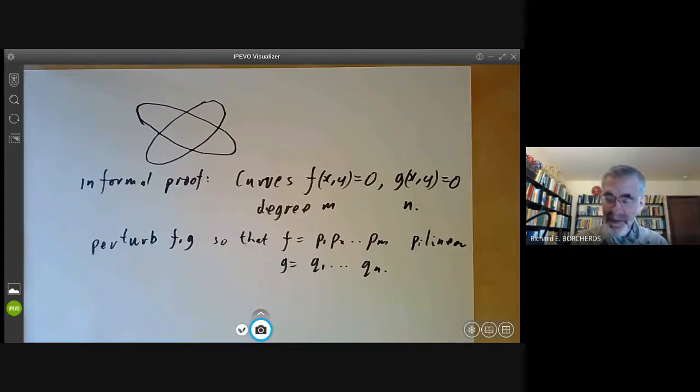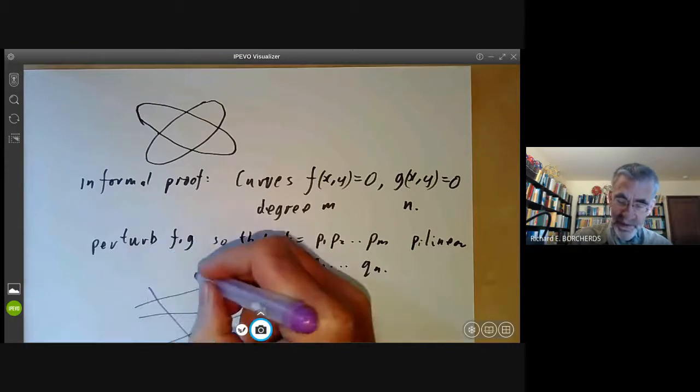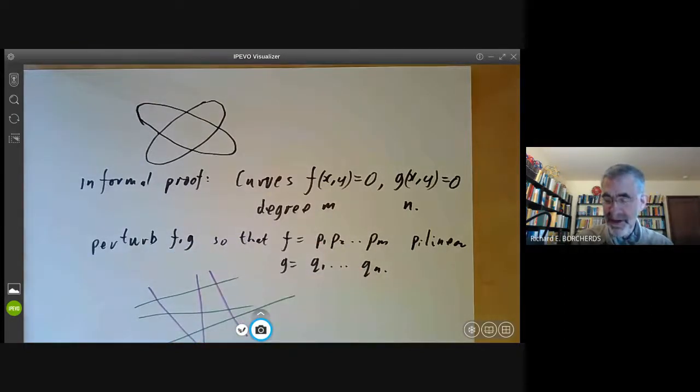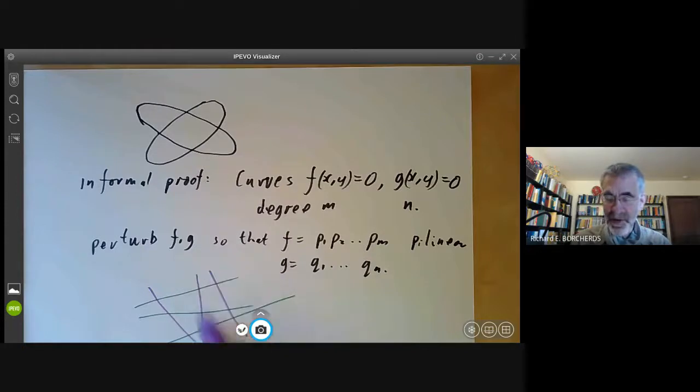So we can just vary their coefficients. And what we can do is f is a product of linear factors and g is also a product of linear factors. Well, then Bezout's theorem is now obvious because f is just a union of m lines. For instance, it might be a union of lines like this. And g is also a union of n lines. So it might be a union of lines like that. So if f and g both are degree three, then f might look like the green thing and g like the purple thing. And it's completely obvious that two lines have a single point of intersection. So the total number of intersection points will be mn.